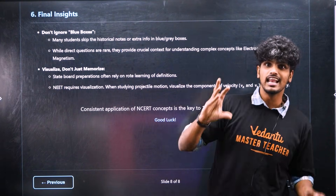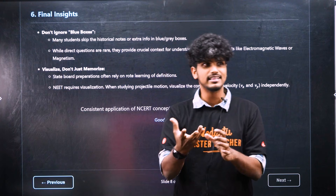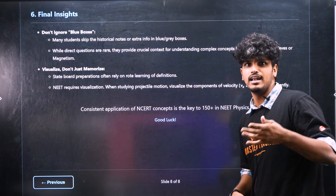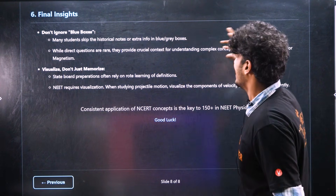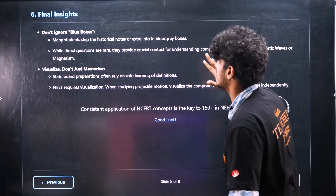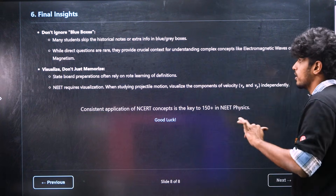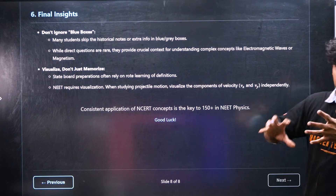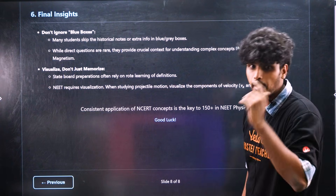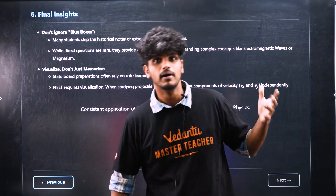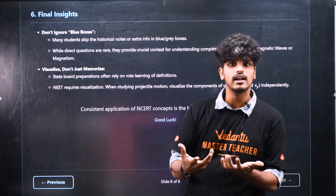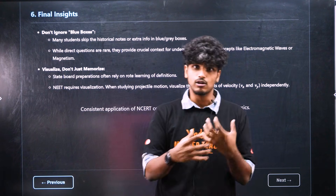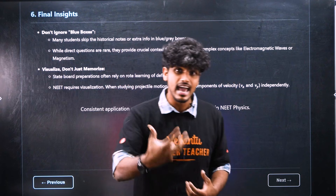Blue boxes — if you have a blue box in NCERT, you can see the blue box. The blue box is the gray box. Don't miss it. When you get a direct question, you can figure it out. You can tell the context and get a better understanding. Just visualize it and just memorize it.